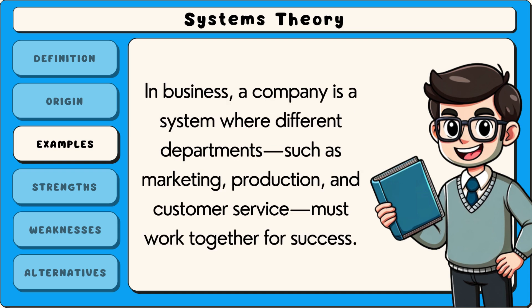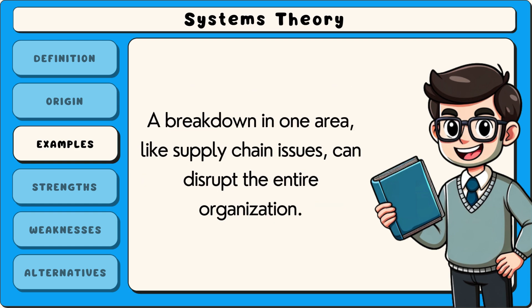In business, a company is a system where different departments, such as marketing, production and customer service, must work together for success. A breakdown in one area, like supply chain issues, can disrupt the entire organisation.